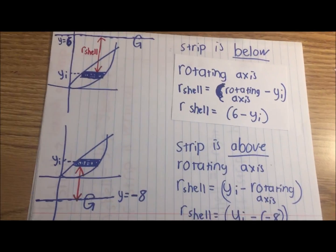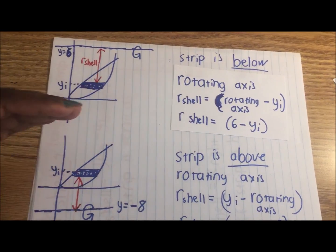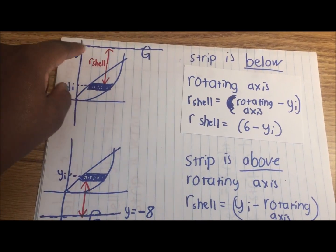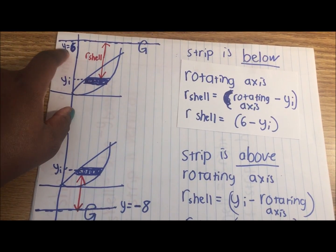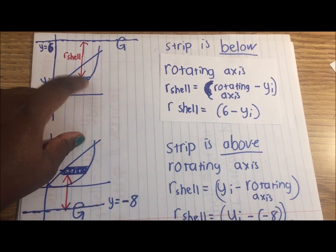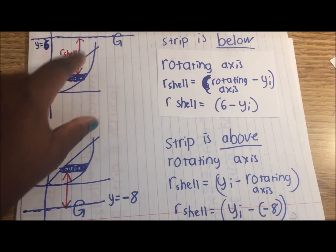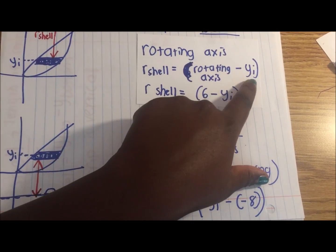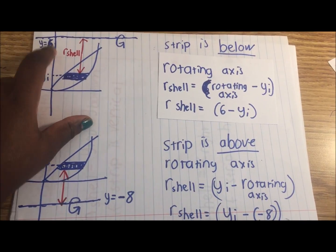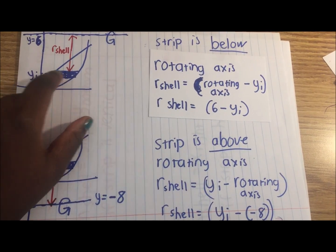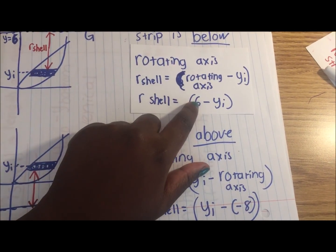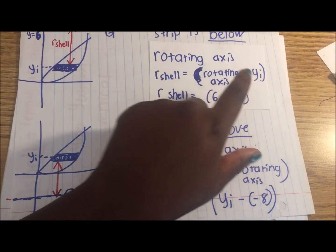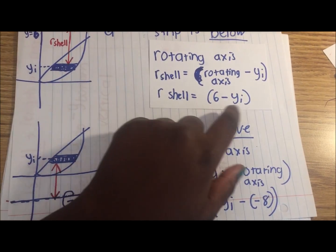Let's do another example, but for when the strip is horizontal. Since this strip is horizontal and the rotating axis is y equals 6, the strip is below this rotating axis. So to find r_shell, we're going to do the rotating axis minus yi. 6 is the rotating axis, and yi is the y component of the strip. So we do 6 minus yi — that's the distance, and r_shell is 6 minus yi.